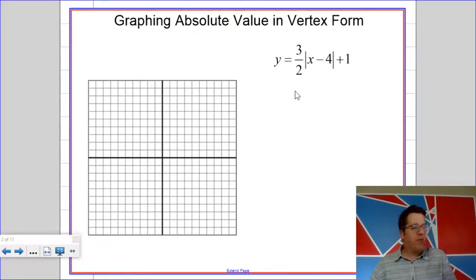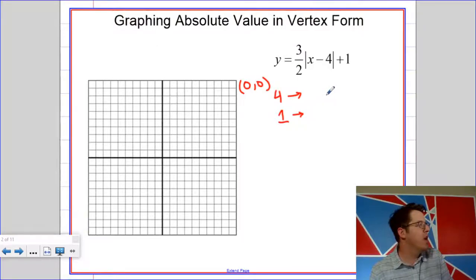This is called vertex form because thinking about those translations are going to help us find the vertex quite easily. The vertex is normally at zero, zero. That's for the parent function because the absolute value of zero is zero. But if we shift that four units to the right and one unit up...